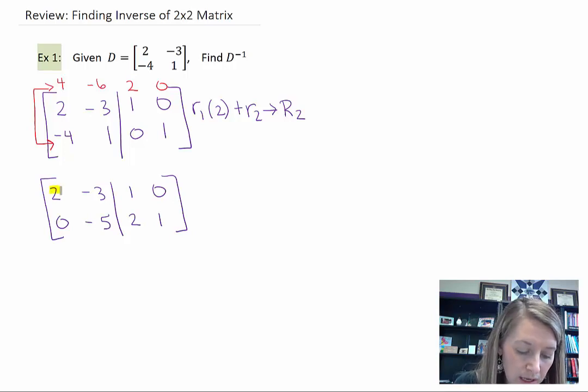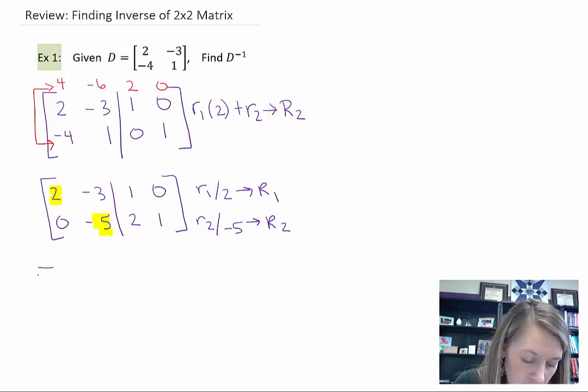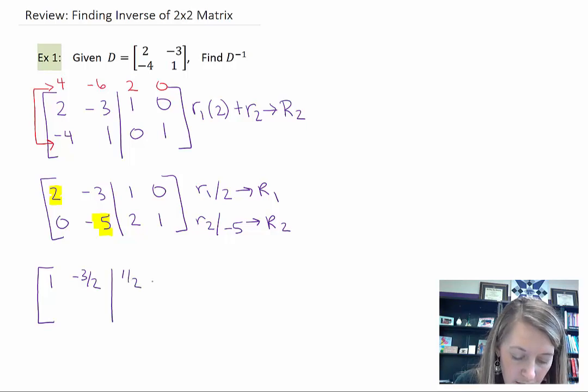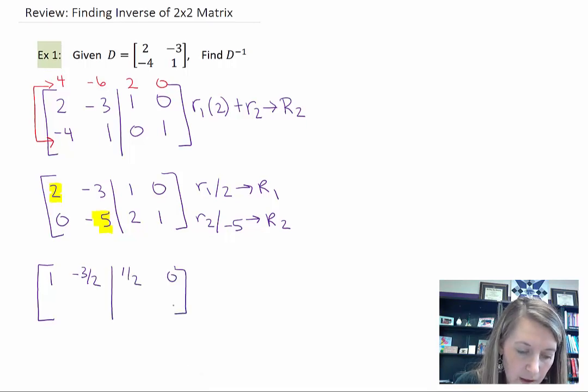Now I'm going to get 1's in both of these places at the same time. I'm going to do that by taking row 1 divided by 2 and putting that back into row 1, and taking row 2 divided by negative 5 and putting that back into row 2. So my row 1 becomes 1, negative 3 halves, 1 half and 0. My row 2 becomes 0, 1, negative 2 fifths and negative 1 fifth.